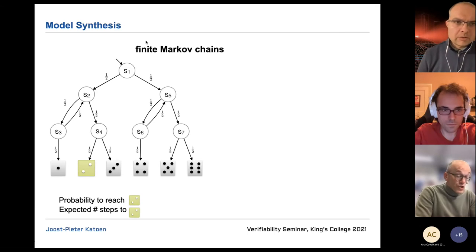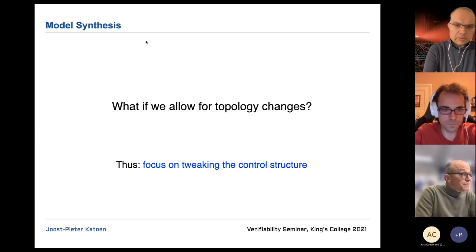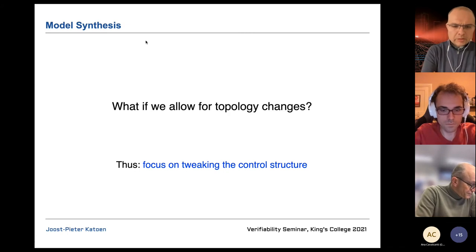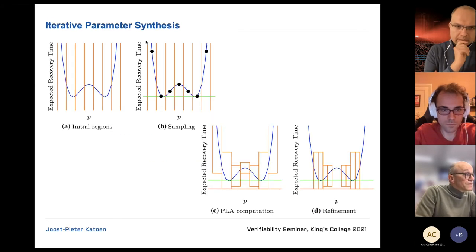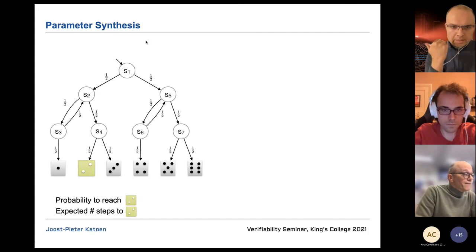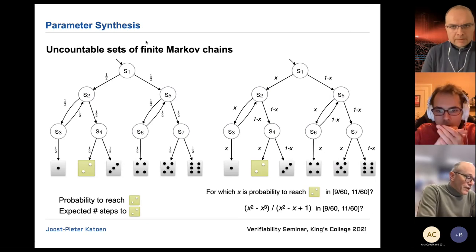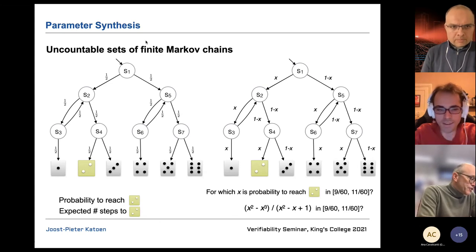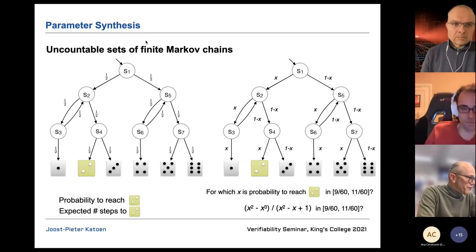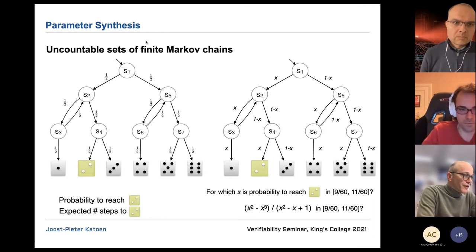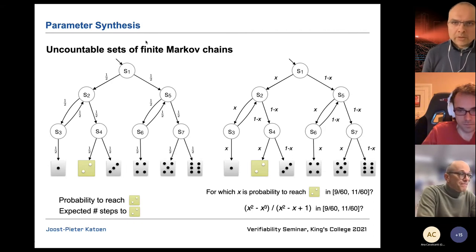Question from audience: The property with respect to which you are synthesizing those parameters — in the case of the six-sided die you're using reachability, but in the ring case you seem to have a more complex type of property. Response: There I use an expected reward property, which is a slight generalization of probabilistic reachability. In this talk I'll focus on probabilistic reachability or expected rewards, synthesizing for reachability probabilities.